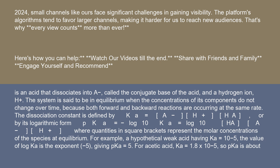For example, a hypothetical weak acid having Ka = 10⁻⁵, the value of log Ka is the exponent, -5, giving pKa = 5. For acetic acid, Ka = 1.8×10⁻⁵, so pKa is about 5.